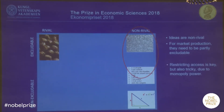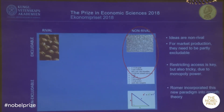Restricting access is key, but it's also tricky, because restricting access means there will be monopoly power — and we know there are problems with monopoly power. So Romer incorporated this new paradigm, this new way of thinking about goods and services, into growth theory and built a simulation model much like Nordhaus's DICE model.